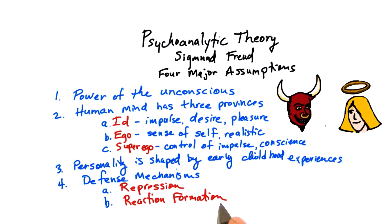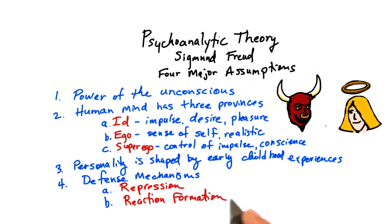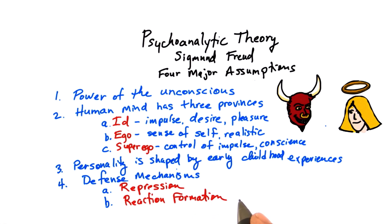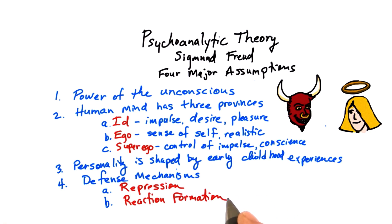With reaction formation, we turn a threatening impulse into its exact opposite. For instance, a parent who harbors unconscious feelings of hostility towards a child — feelings that are too threatening — turns it into its opposite and becomes smothering with affection. Likewise, another example is homophobia: when someone is threatened by their own latent homosexual impulses and turns that impulse into hostility towards those who express homosexual behavior.